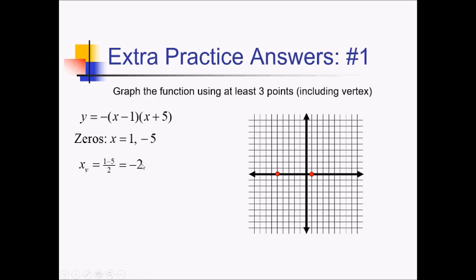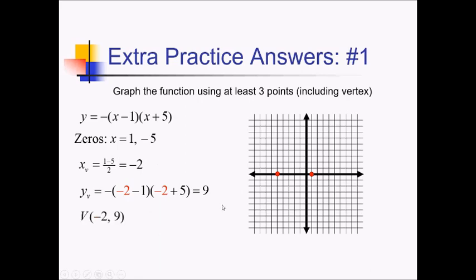And to get the y-value, we just plug that back into the original parabola formula. So we have negative, parentheses, negative 2 minus 1, negative 2 plus 5. So we've got negative, negative 3 — that's positive 3. Positive 3 times another 3 gives us 9. So then we have a vertex of negative 2 comma 9, which is all the way up here. And then just draw the parabola through your three points.